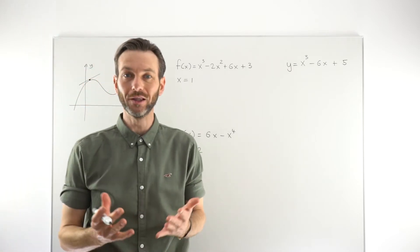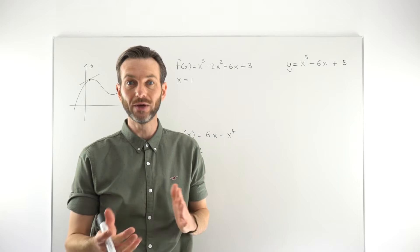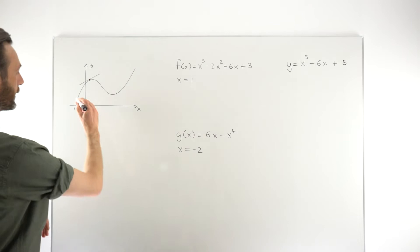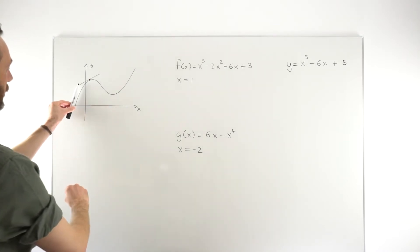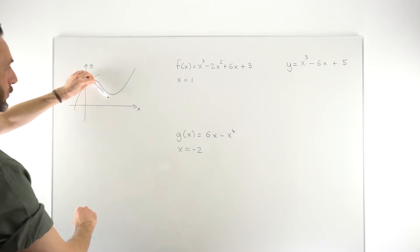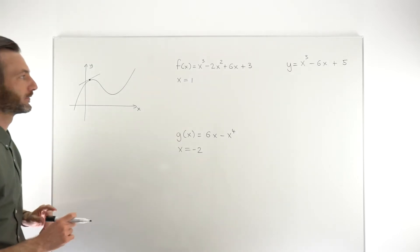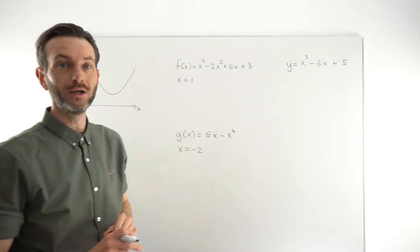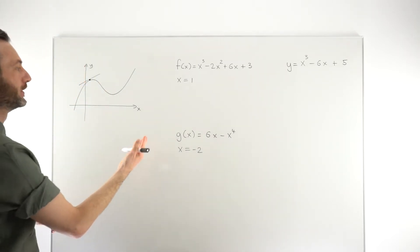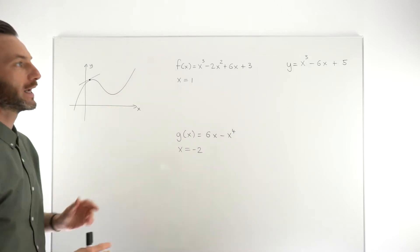We realized that we can figure out the gradient of that tangent line by differentiating the curve and then substituting in the x-coordinate of the point of tangency. So basically, we established a link between gradient and derivative. We define the derivative informally to be a gradient function, which means as you move around the curve, the tangent lines change.